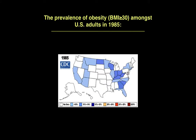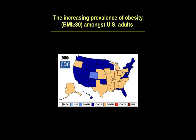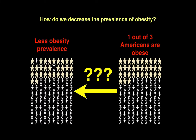Here's a map of the prevalence of obesity amongst U.S. adults in 1985. As you can see, there's not much data collected, and the data that has been collected shows that the prevalence of obesity is very low in most states — less than 10% or between 10 and 14% in many states. But as time progressed, this changed. As the blue gets darker and becomes more red, we see the prevalence of obesity increasing until 2010, when one out of three Americans were obese, and that's how it is now. So the question is, how do we decrease the prevalence of obesity?